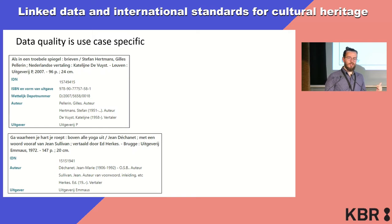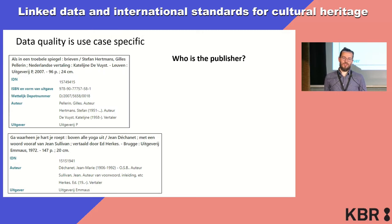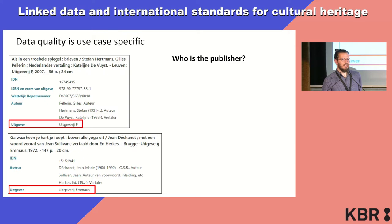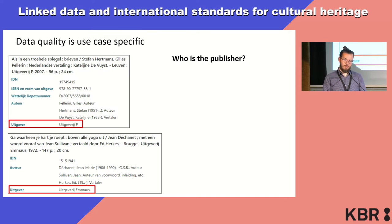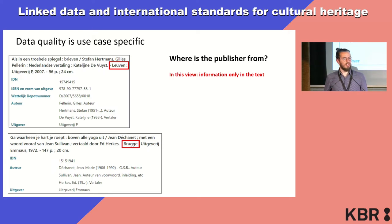The use case is: we want to know more about the publisher — who is the publisher? We can see in both records that the 'uitgever' — which is Dutch for publisher — is mentioned there, so the quality is sufficient for this use case. But if we would like to know where the publisher is from, it's still there in the data, but we see it's just somewhere in the text string. It's there, but it might be a bit more difficult to get it out, even though it's maybe in a standard format.